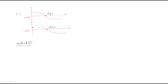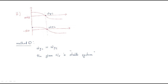If you observe, the gain crossover frequency and the phase crossover frequency are both the same. Whenever both are the same, the given system is a marginally stable system. Otherwise, you move to the second method.